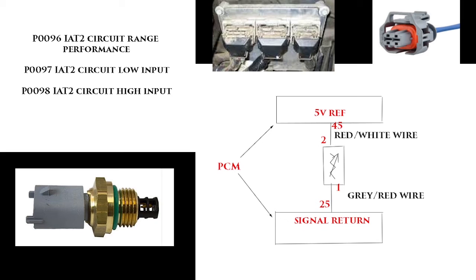If your resistance checks good and you're still getting the code after disconnecting and checking things, you want to pull your connectors off again, double-check for any pin fit issue, and you possibly have a PCM that's gone bad. You may want to take it to a shop or have somebody double-check your work. Sometimes you can go down a rabbit trail and overlook something. If you have a suspected bad PCM, there are a lot of people that recondition PCMs — you can call them and see if it's something they can repair.